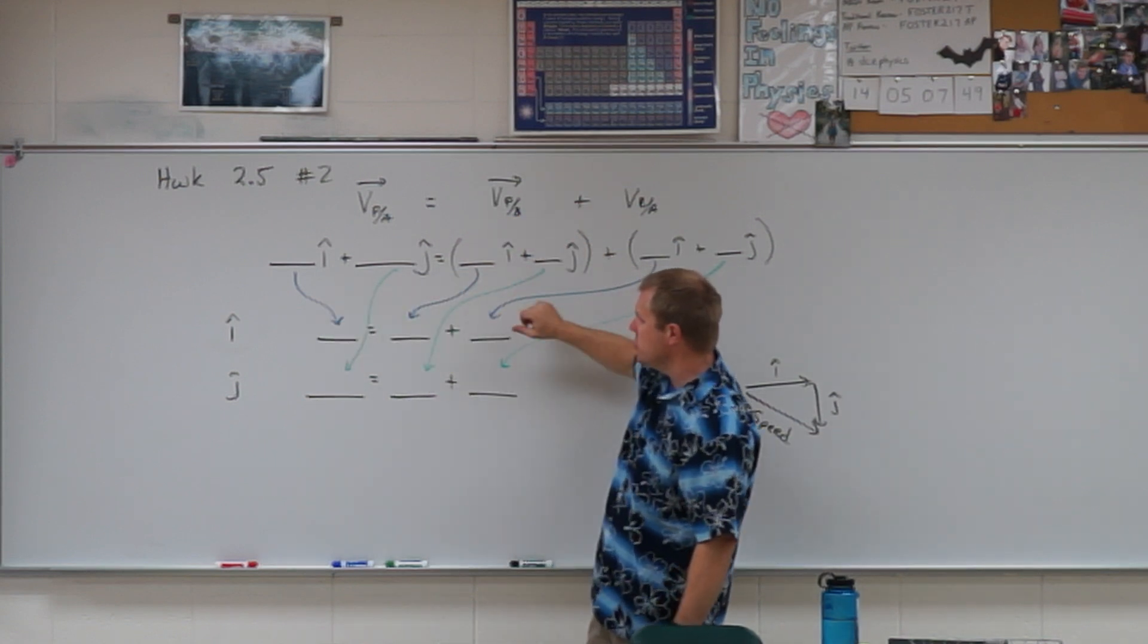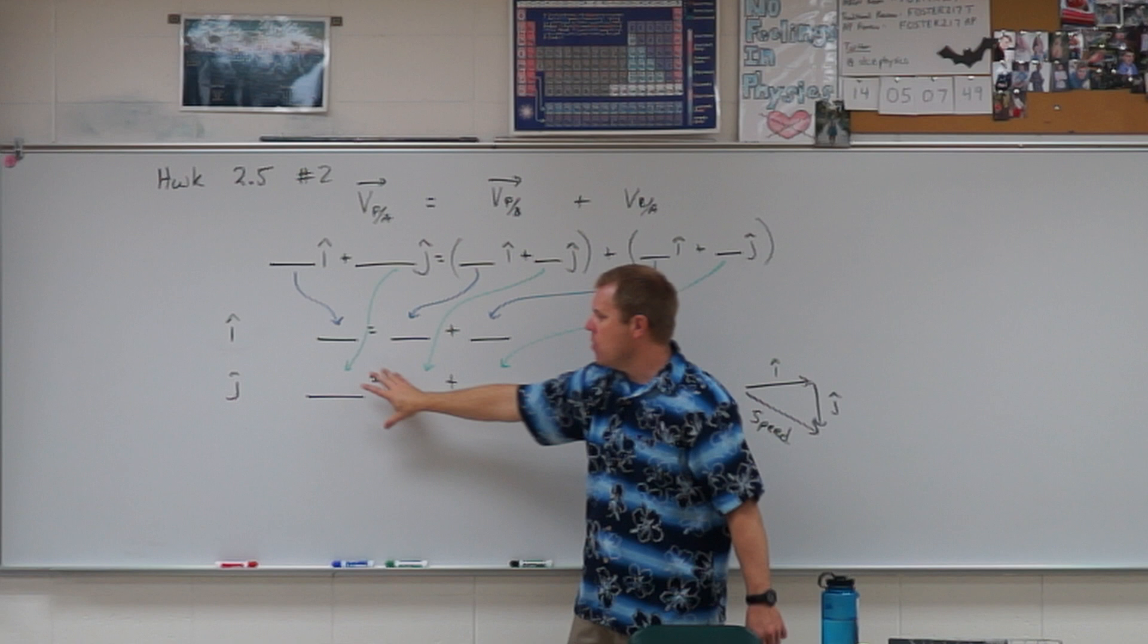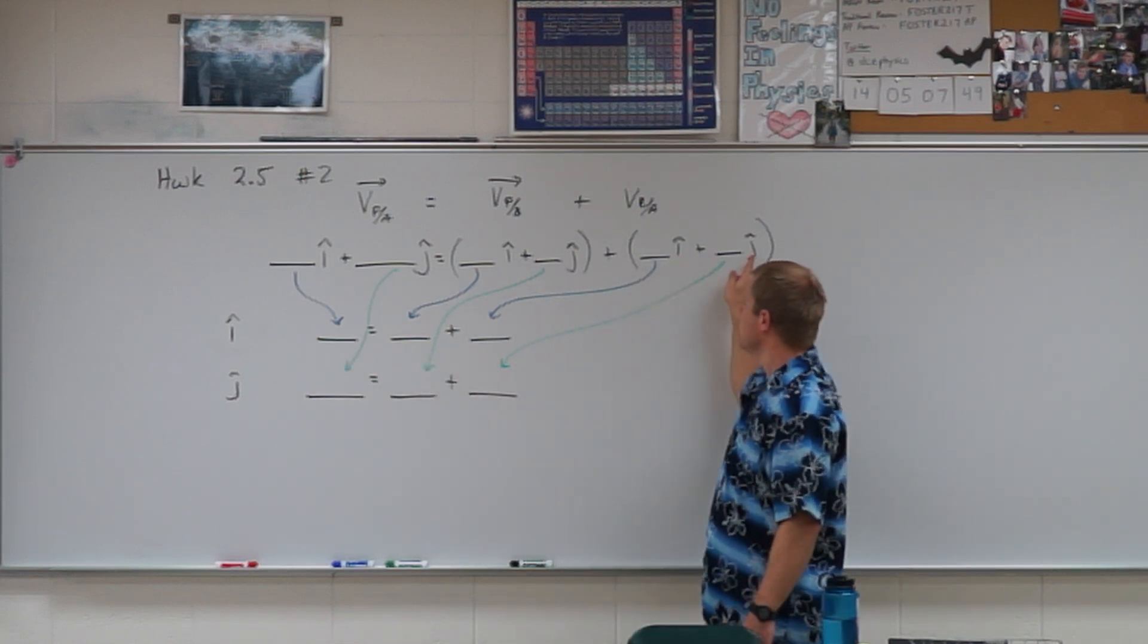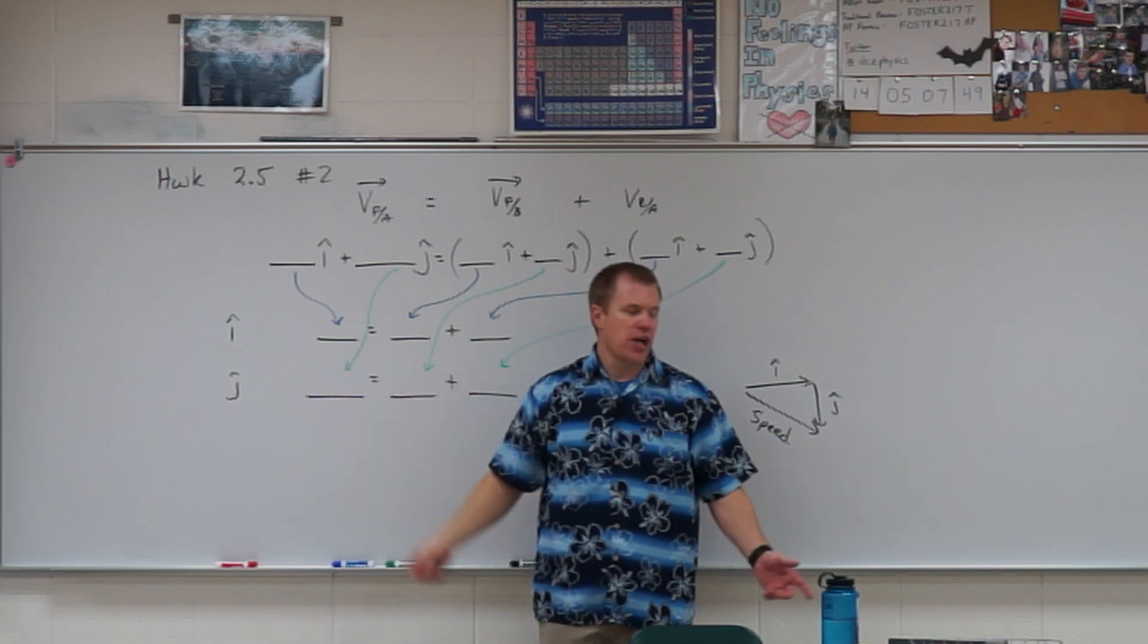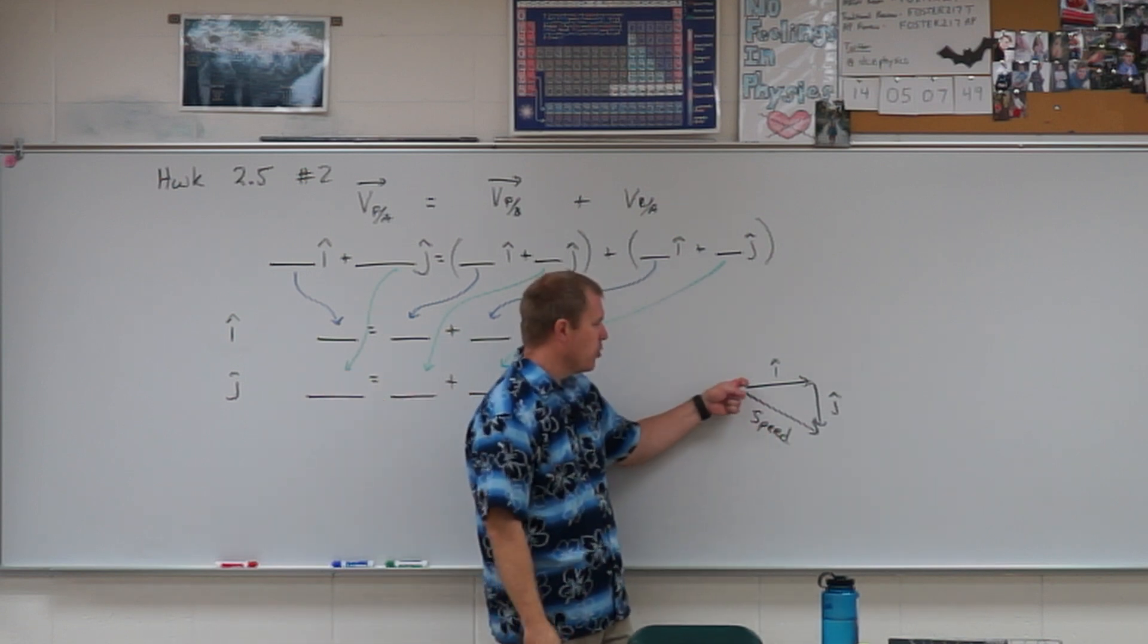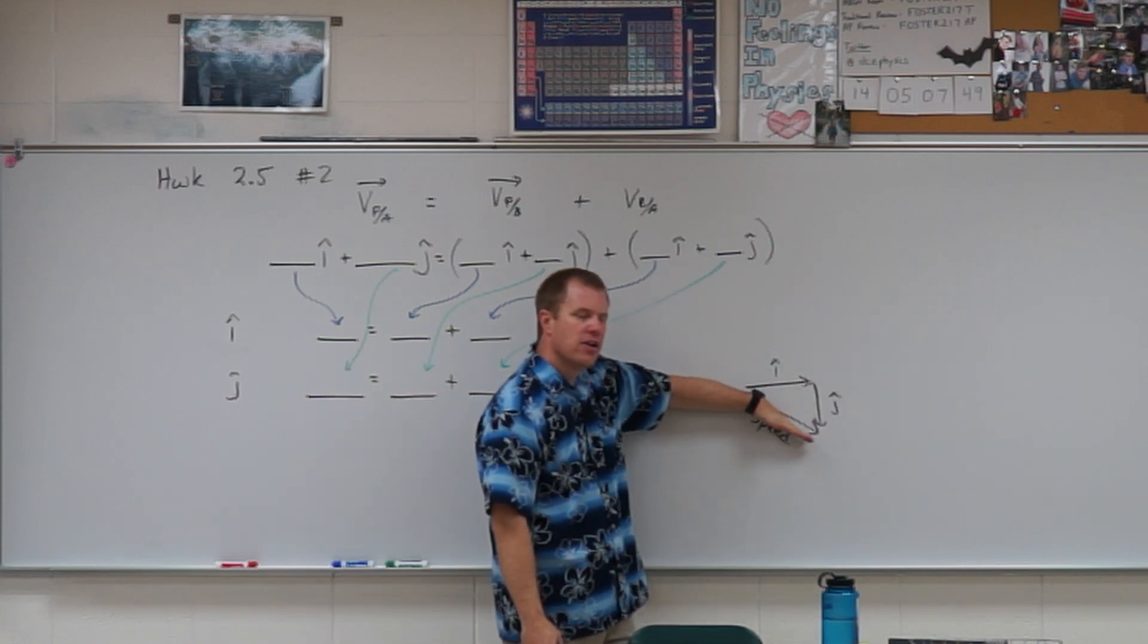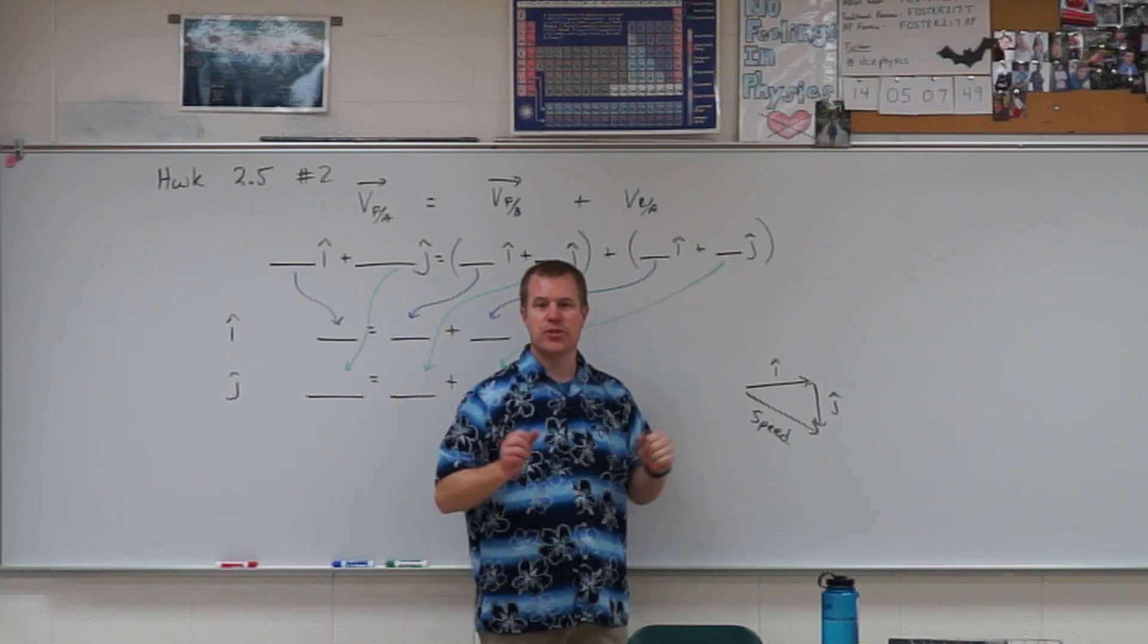You're making an x-direction equation with the i-hats and a y-direction equation with the j-hats. Once you figure out the total i and the total j to figure out the speed, you just need to put those two components back together using the Pythagorean theorem. There's your hint.